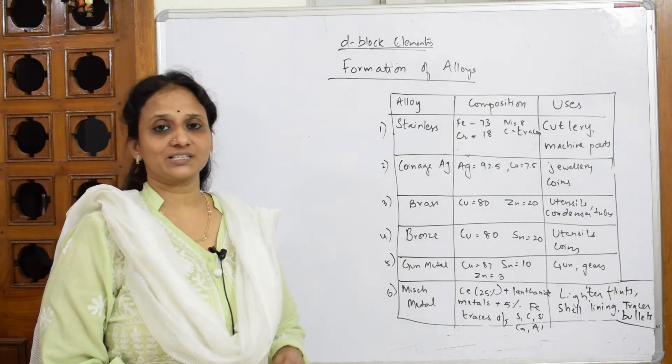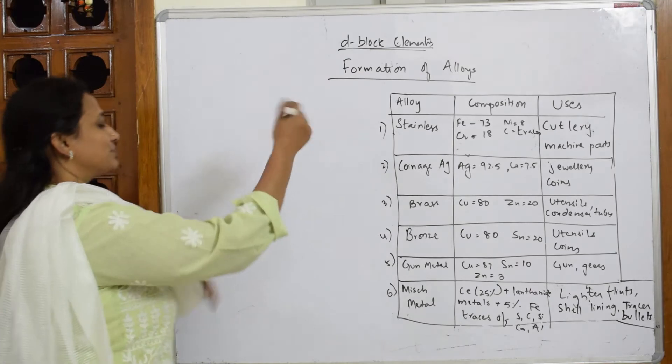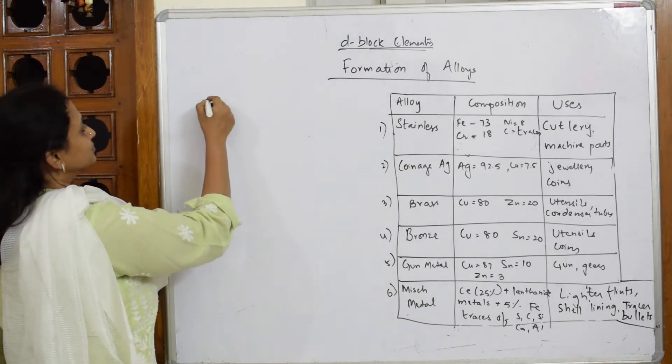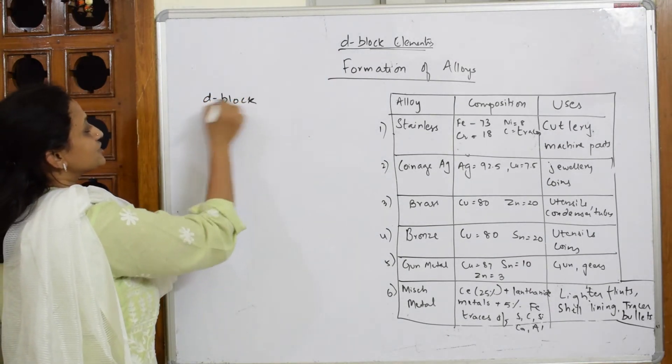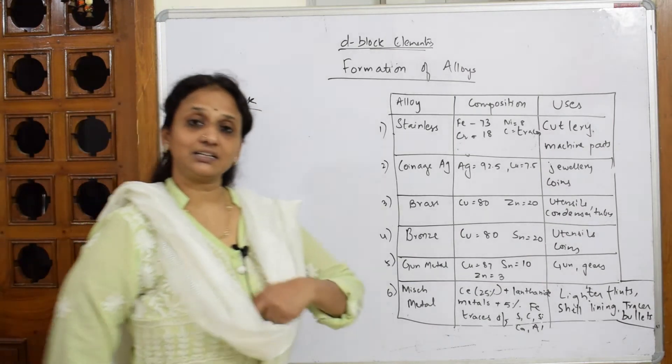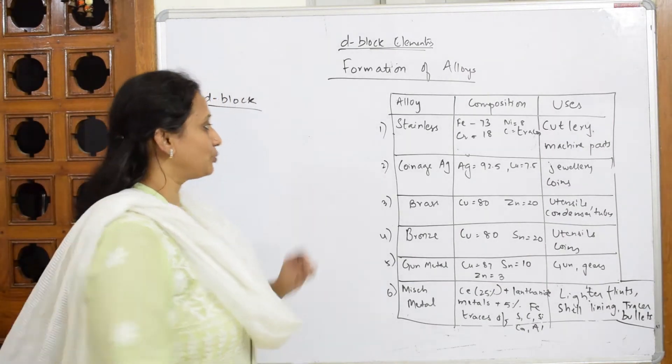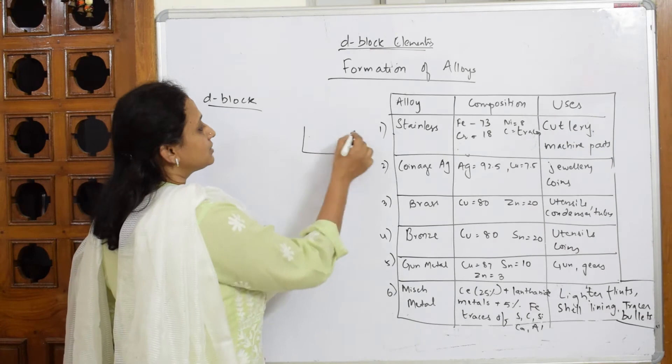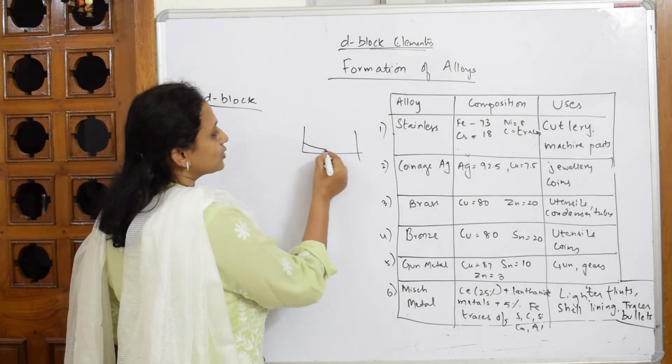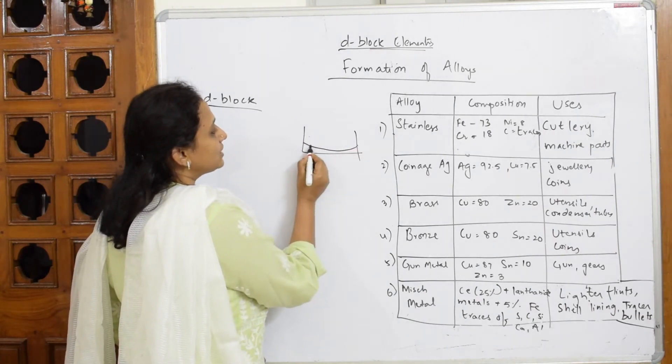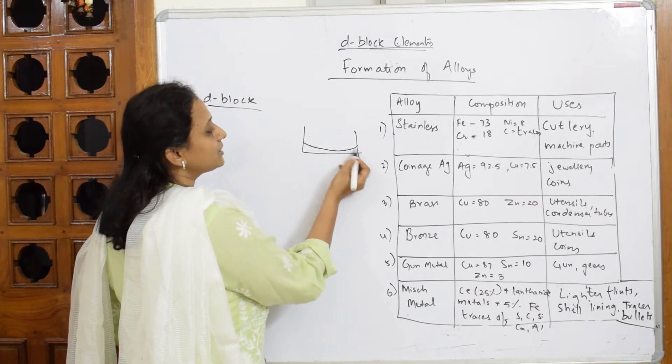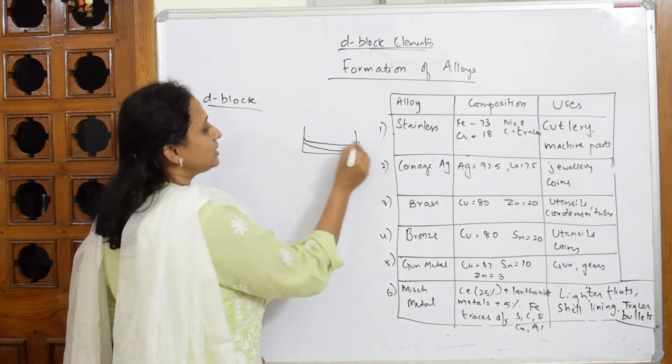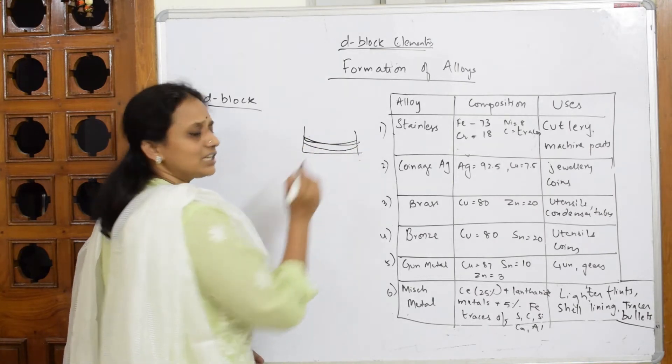Why do D-block elements form alloys? The concept is basically very simple. When we look at the trend in atomic radii of the 3d, 4d, and 5d series, they are very close. The 3d series goes one, two, three, four like that. The atomic radii variation between 3d, 4d, and 5d is very close.